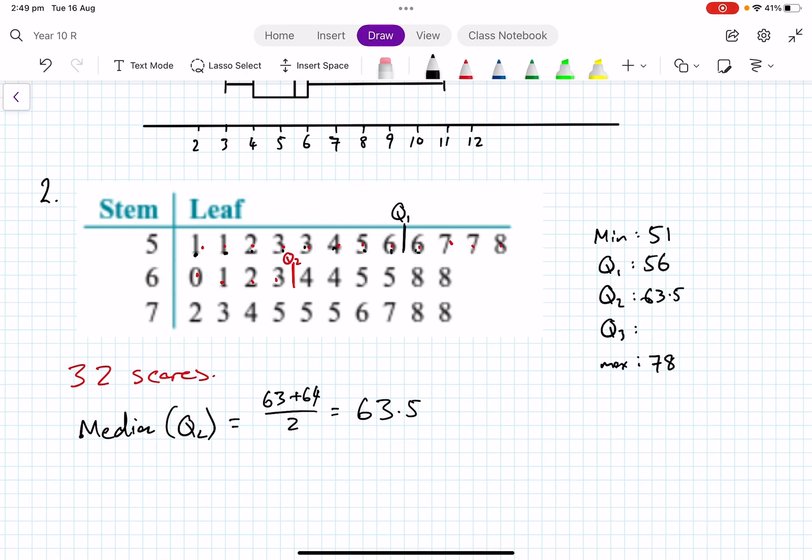And then my next half, I've got 16: one, two, three, four, five, six, seven, eight, and then another eight. So my Q3 is here, between the two scores. So Q3, my upper quartile, 73 plus 74 divided by 2, which is 73.5.